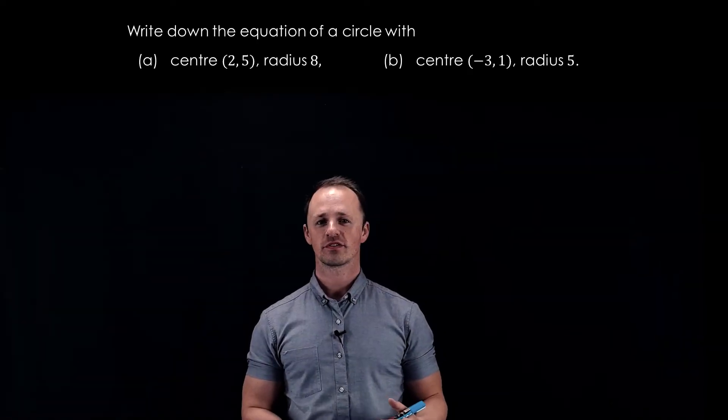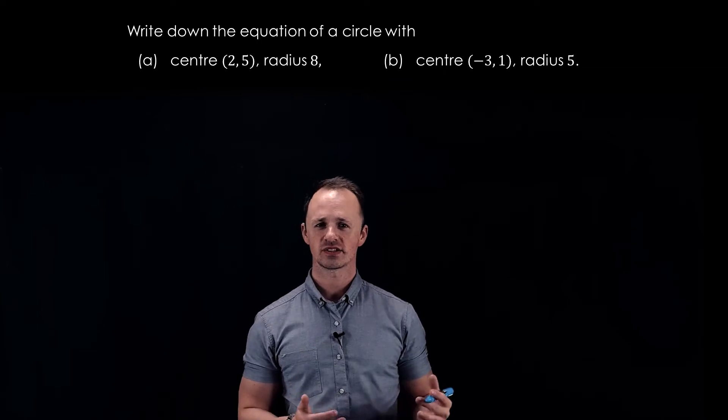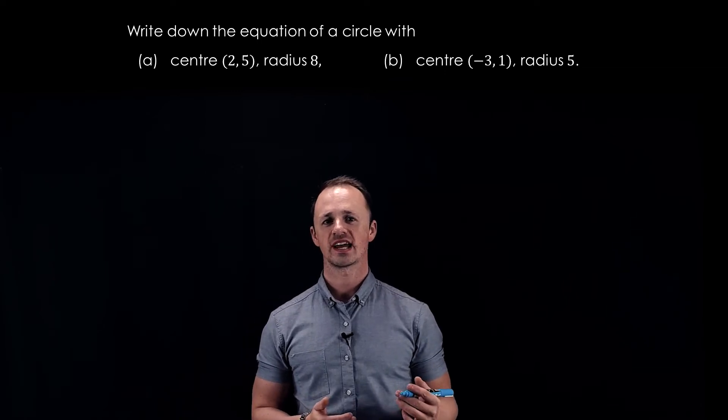In this example we're going to find the equation of a circle with center (2, 5), radius 8.